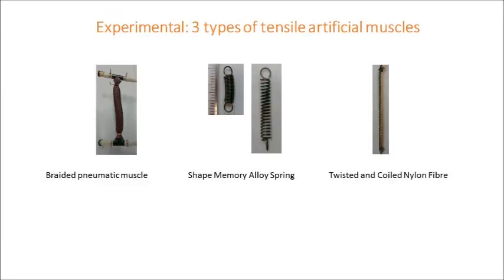We now apply this graphical method for estimating actuation performance against the experimentally measured actuation for three types of tensile artificial muscles — all three contract when stimulated. The first is a braided pneumatic muscle where inflation of an internal bladder causes contraction. Second is a shape memory alloy spring which is first stretched then heated to cause contraction. And thirdly, a twisted and coiled polymer fiber that actuates by contraction on heating and expansion on cooling.